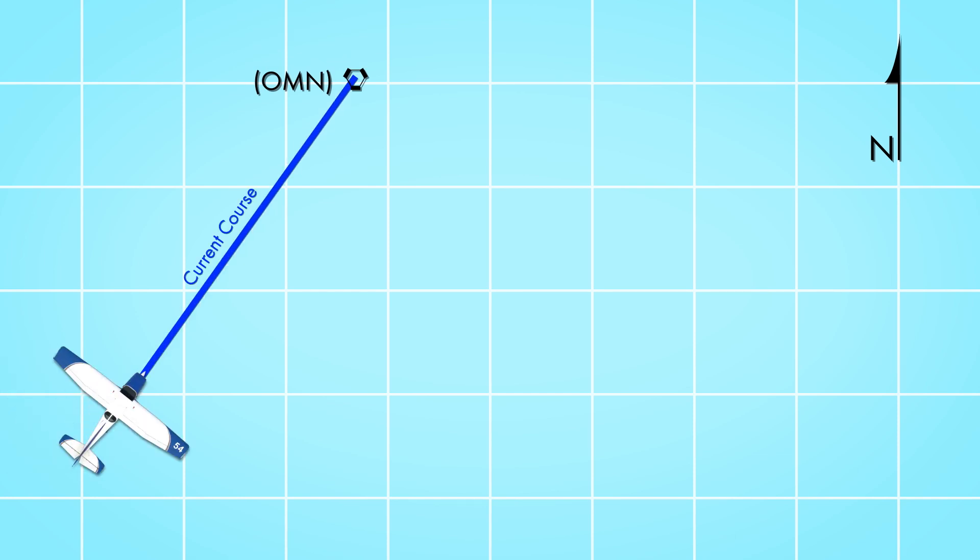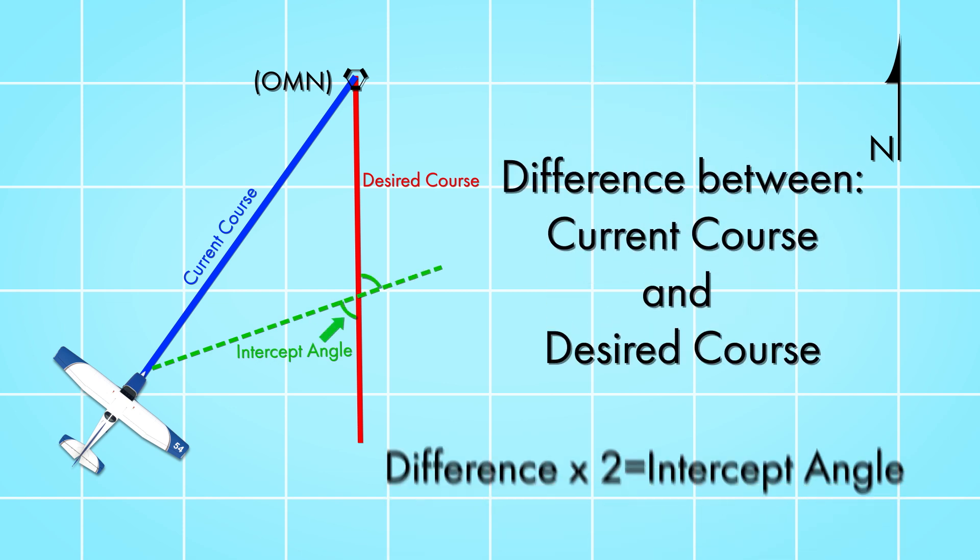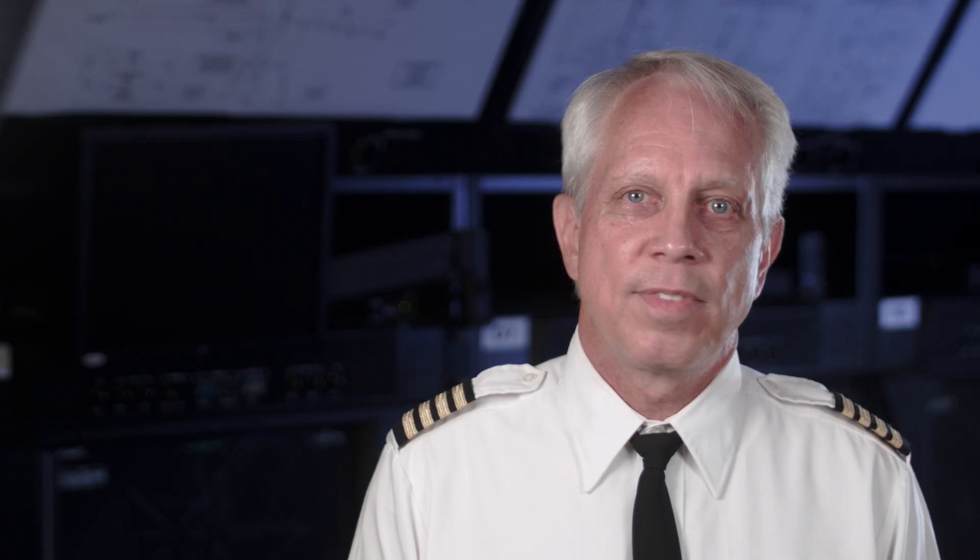Now that you know where you are, you can figure out how to get to where you want to be. Since you've either got a flight plan or instructions from ATC, you should already know the course to the station you should be tracking. From here, with a tiny bit of math, you can calculate your intercept angle. Start by finding the difference between your current course to and your desired course to. Double that difference and you've got your intercept angle. That angle should never be less than 20 or more than 90 degrees, because neither one of those is going to help you very much.